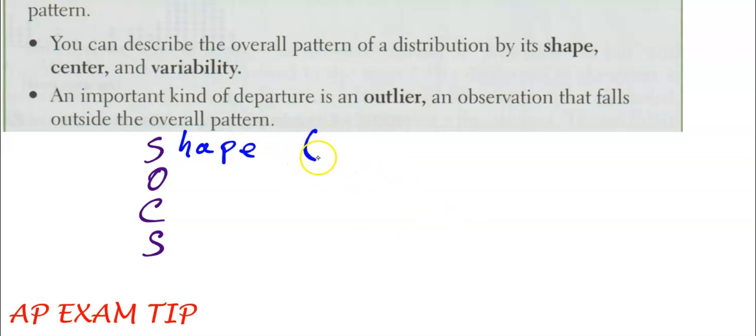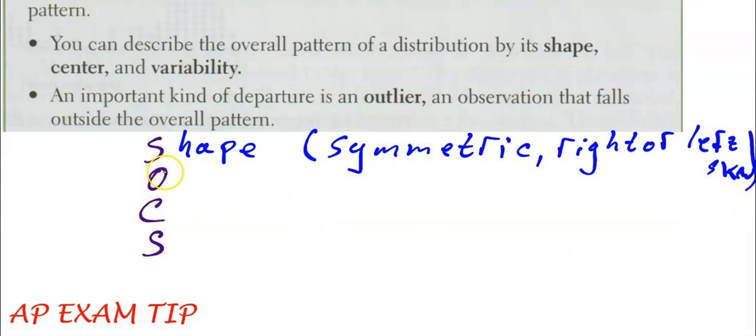Our shape is symmetric or skewed, and you'll tell me what type of skew—symmetric, right, or left skewed. You're also going to tell the outliers—these are my unusual values.